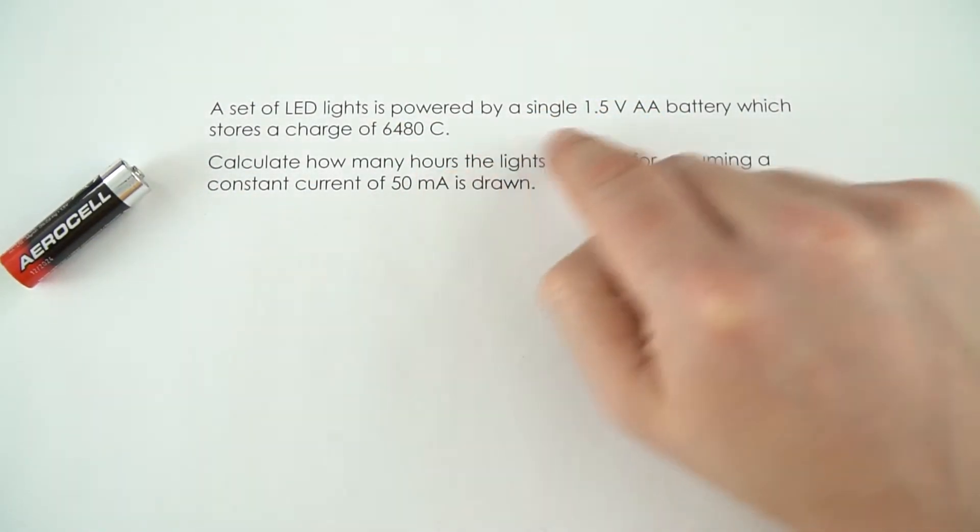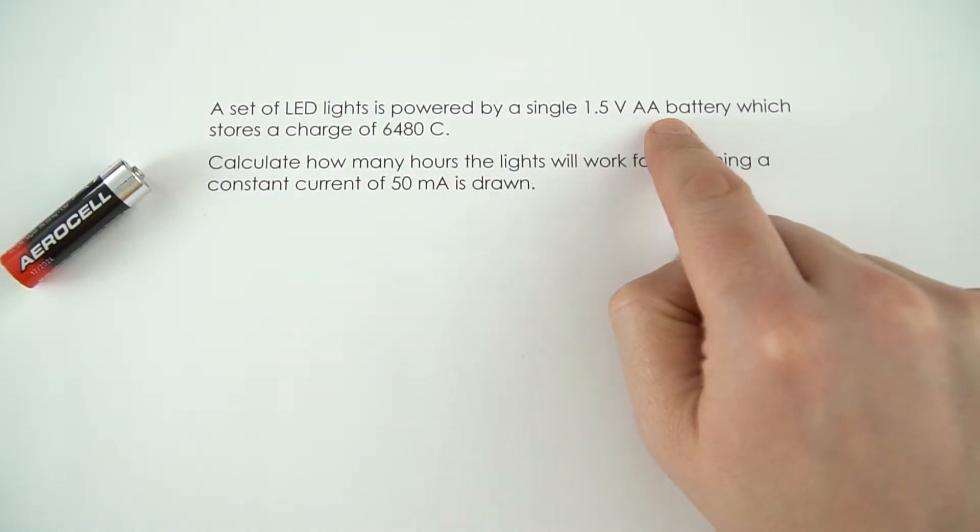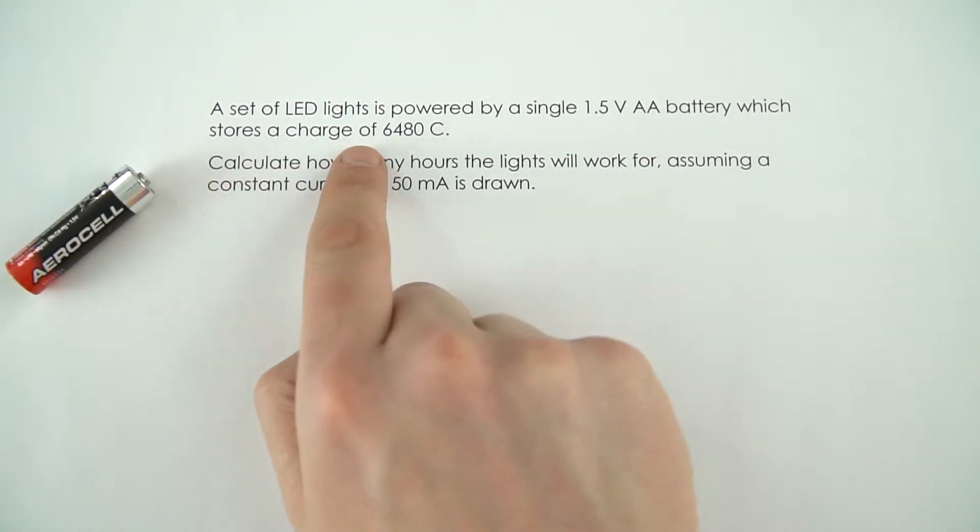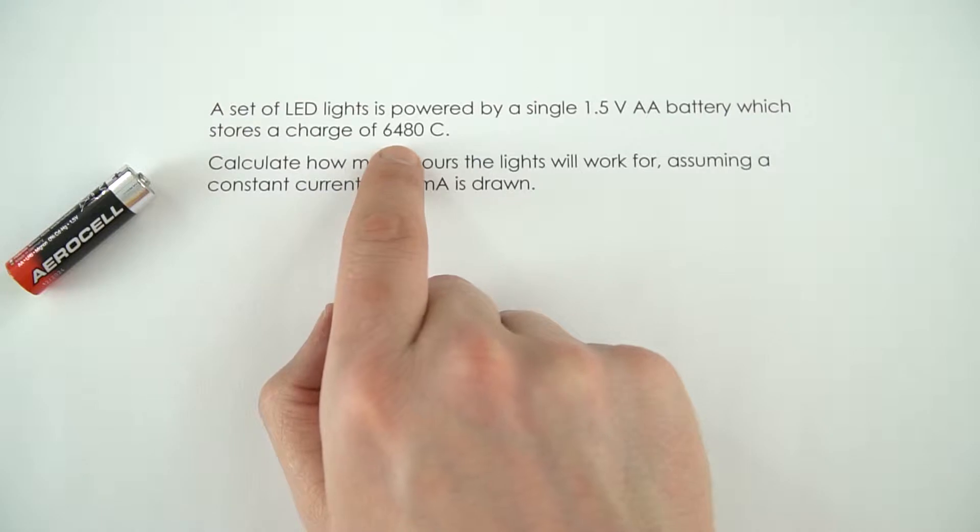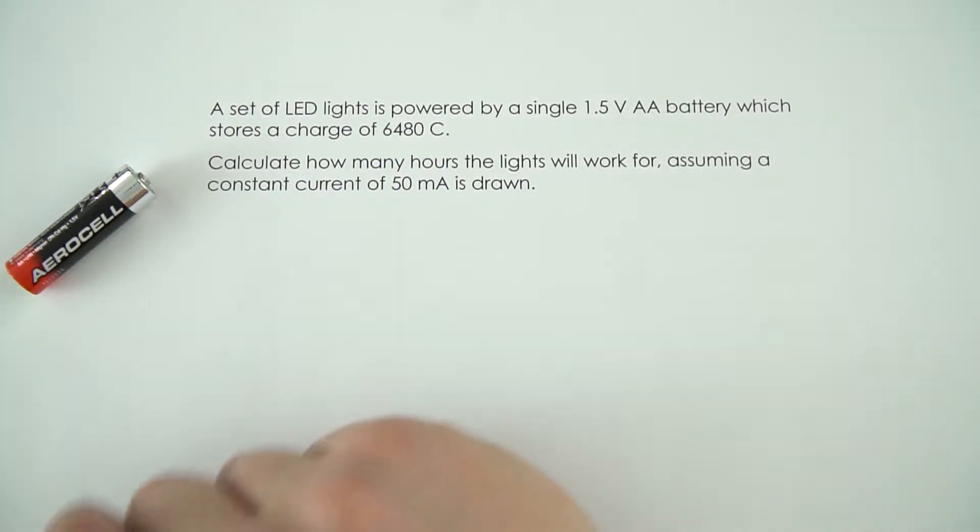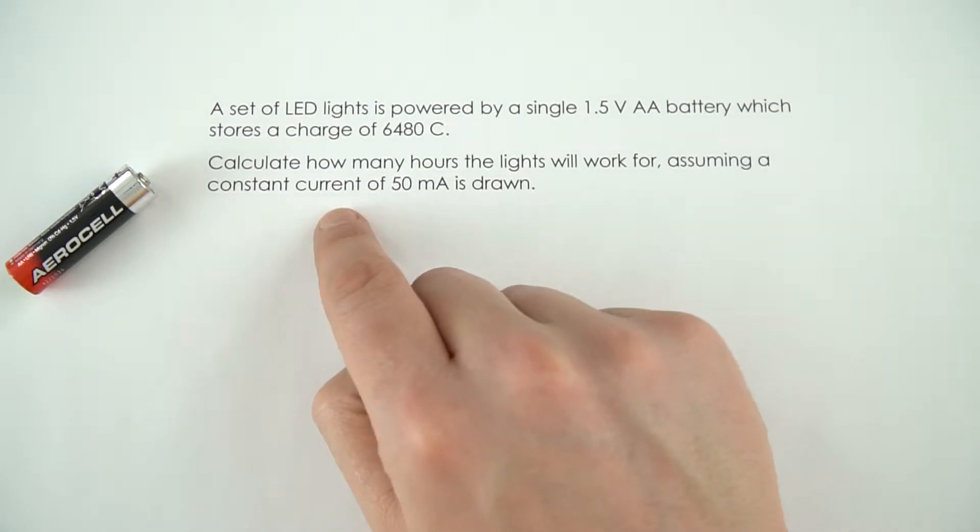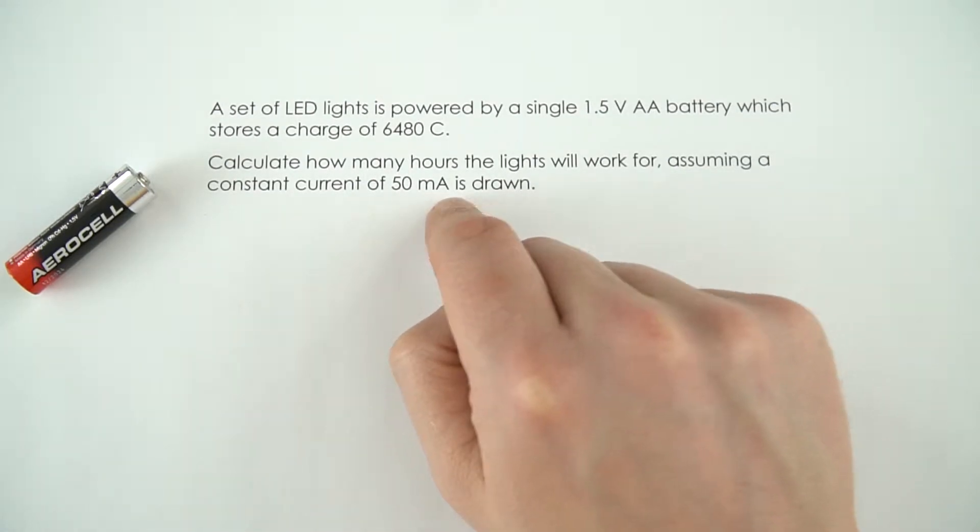So we've got a 1.5V AA battery which is just this size of battery that we have here and this stores a charge of 6480 coulombs and we want to know the time that it's going to last for assuming that it's got a constant current of 50 milliamps.